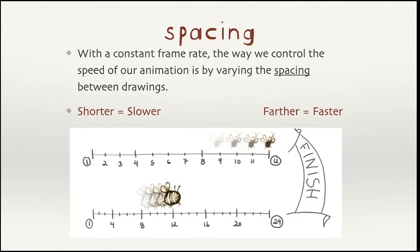Timing and spacing are related. If you have a constant frame rate, the way you control the speed of the animation is by varying the spacing between your drawings — how far you move things across the page, or how much you move objects. There's a little mnemonic to help remember how this works: the shorter the space between drawings, the slower something is going to move; the farther those drawings are spaced apart, the faster something is going to move.